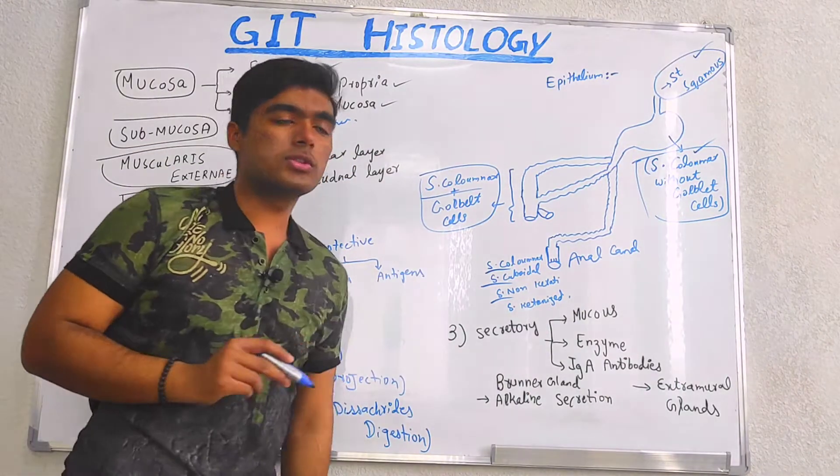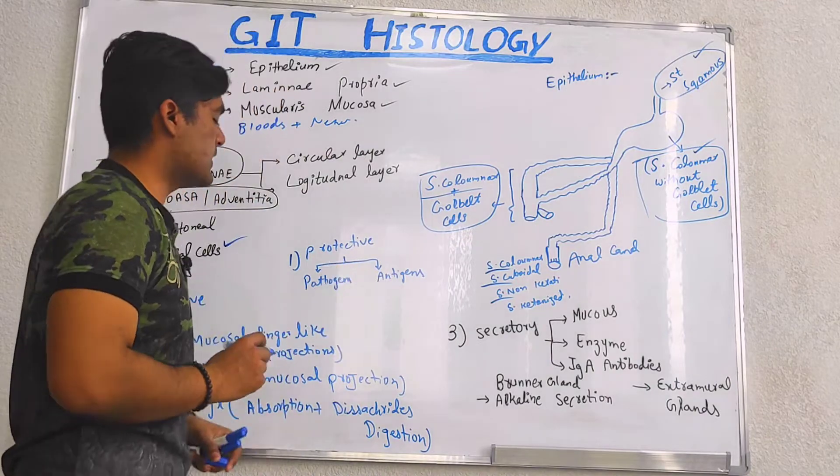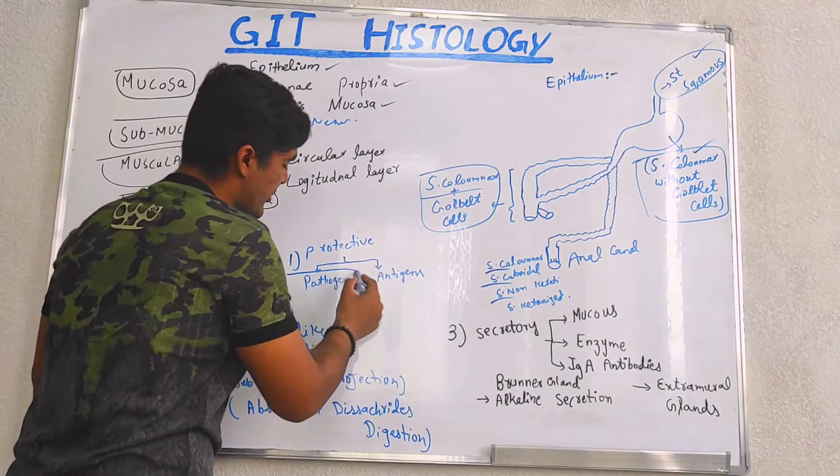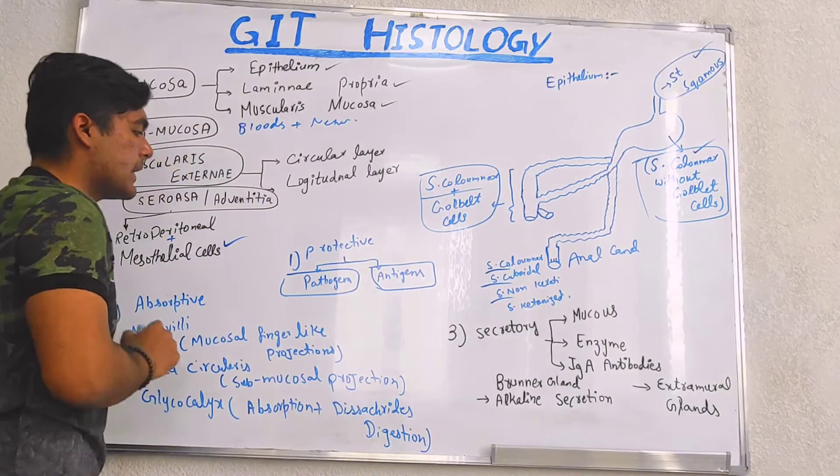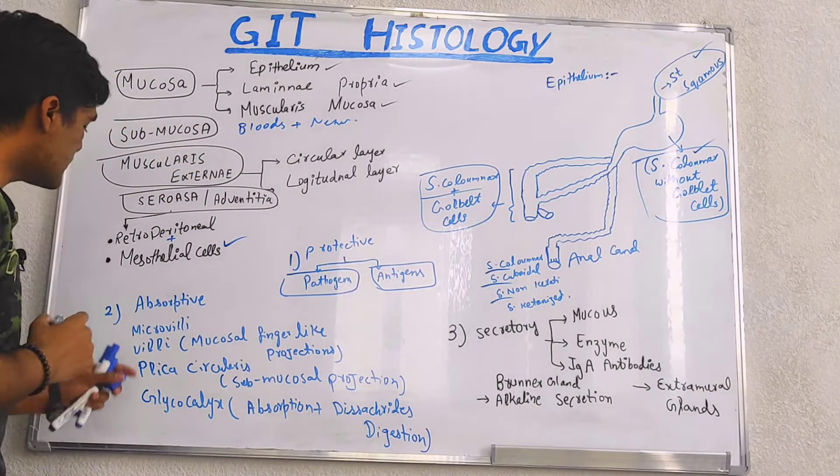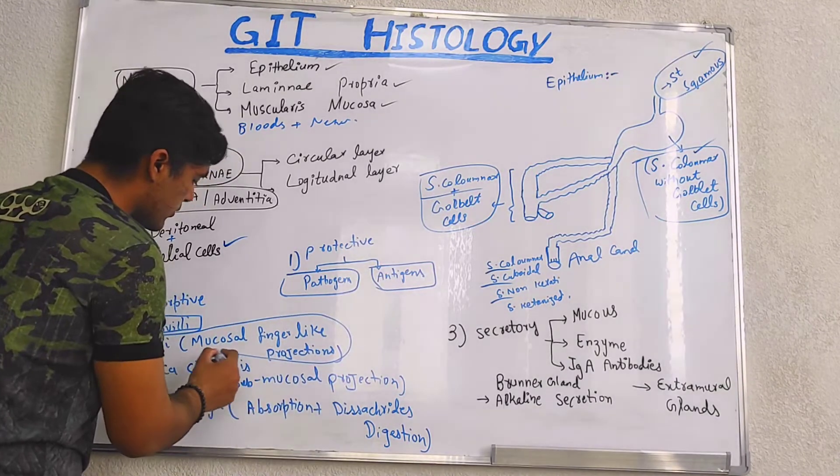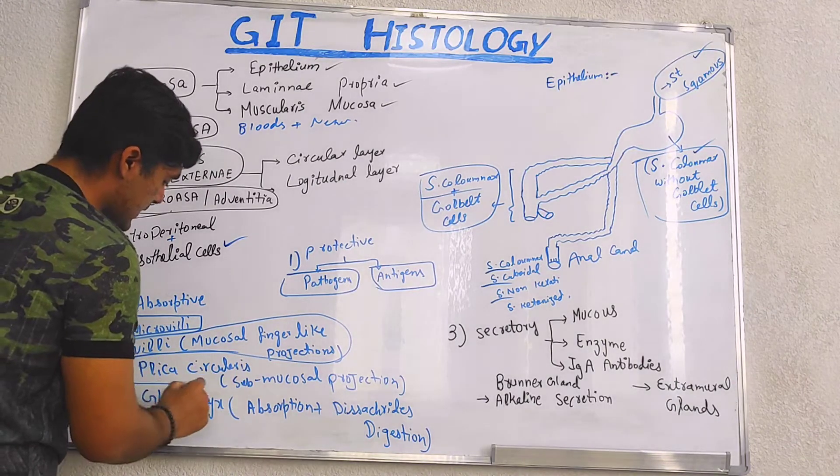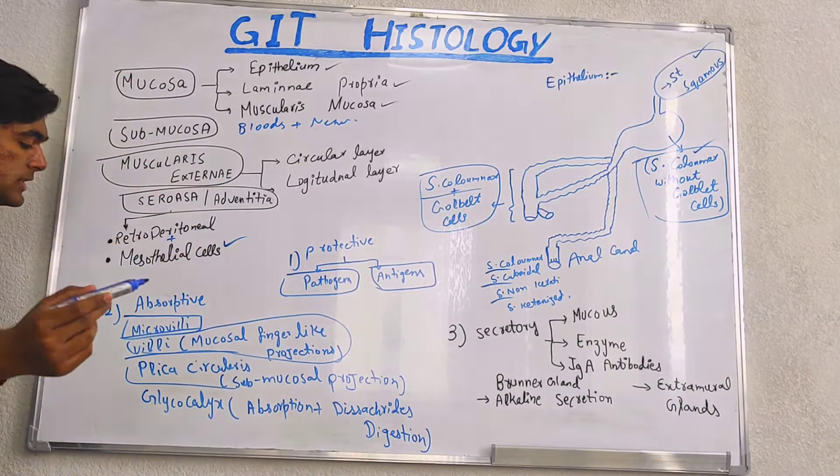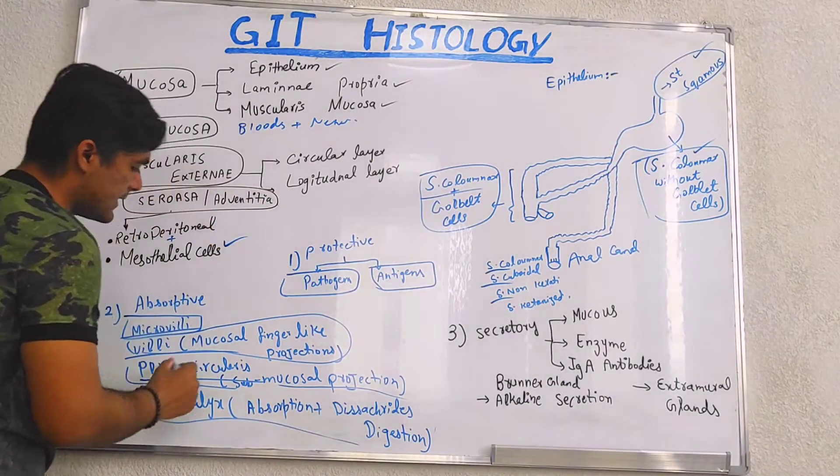Talking about the roles of epithelium in our GI system. So first role is protective role, meaning it protects GI from pathogens and antigens. Second role is absorptive role. We have microvilli, villi which are mucosal projections, and we have plicae circulares which are submucosal projections. We have glycocalyx for absorption and disaccharide digestion.